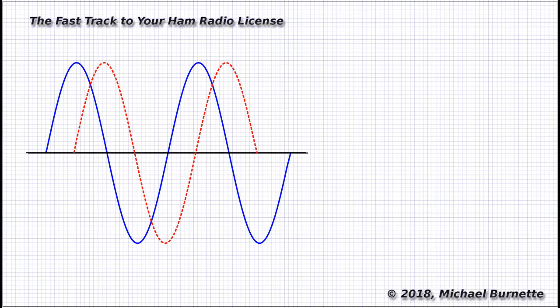Here are two sine waves, 90 degrees out of phase. We're looking at what's happening in a circuit. We'll say the solid blue wave is voltage, and the dotted red wave is current. Notice how each time the voltage hits maximum positive or negative, the current is at zero.